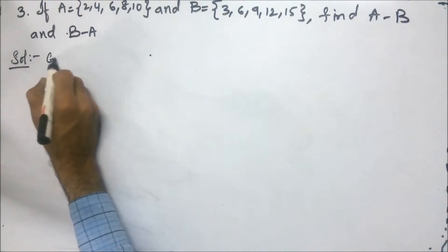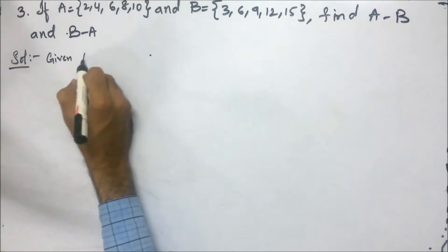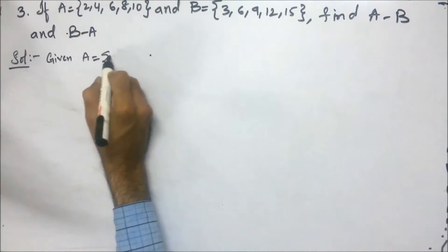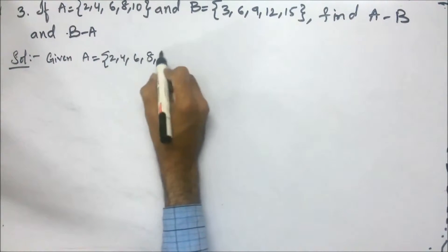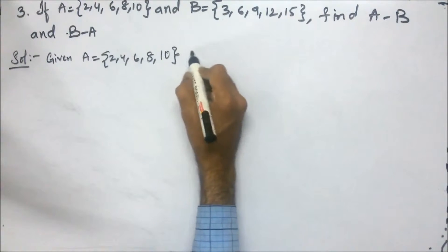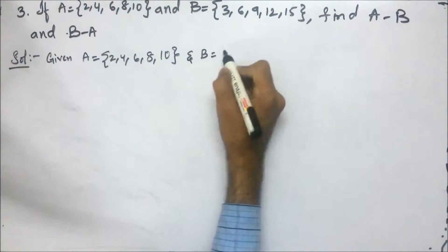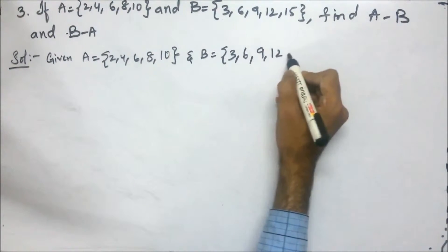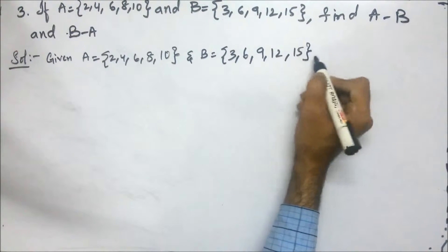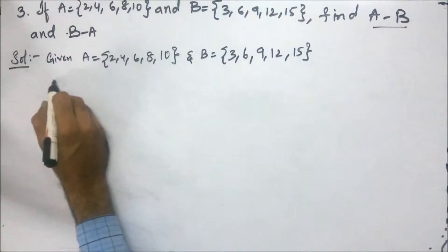Given sets are A equals 2, 4, 6, 8, 10 and B equals 3, 6, 9, 12, and 15. Next we have to find A minus B.